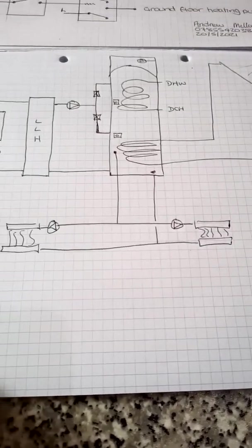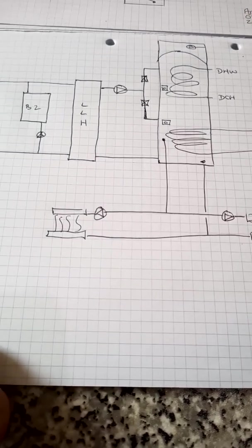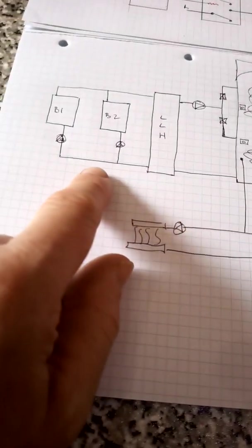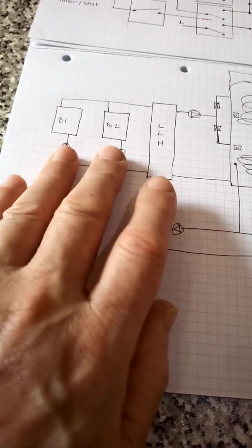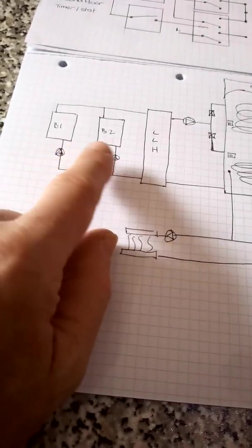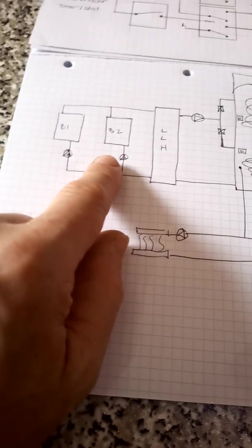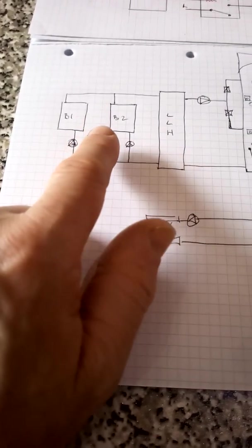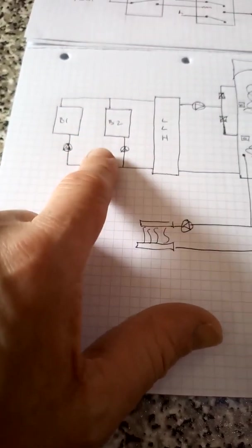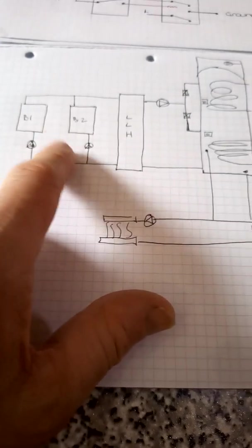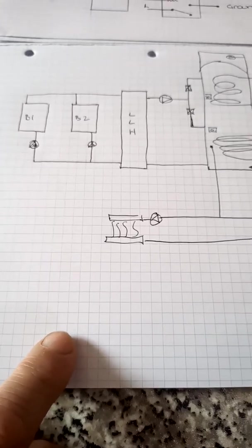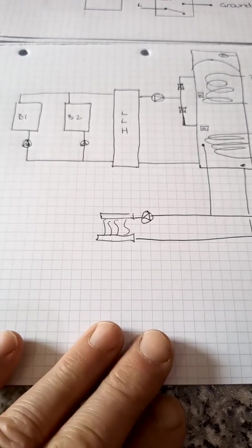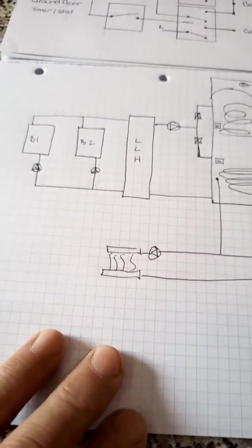And it had been modified by the customer some years ago who was an electronics engineer or electrical engineer. So he'd made his own adaptations to the system. And when the guy had modified it and installed these two boilers instead of a single Keston that used to be on it, he'd not utilized the two temperature supplies and he'd made some strange wiring modifications, let's say.